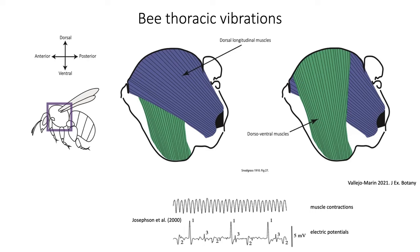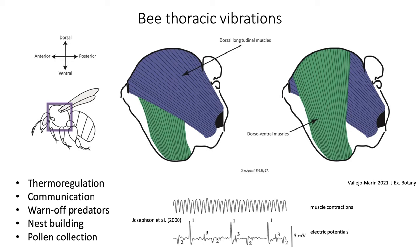These thoracic vibrations are associated not only with flight and pollen collection, but also with thermoregulation, communication during mating, communication among nestmates to pass information on floral resources, as an alarm signal to warn of predators, and some bees and wasps also use this type of vibration to compact materials used in nest building.